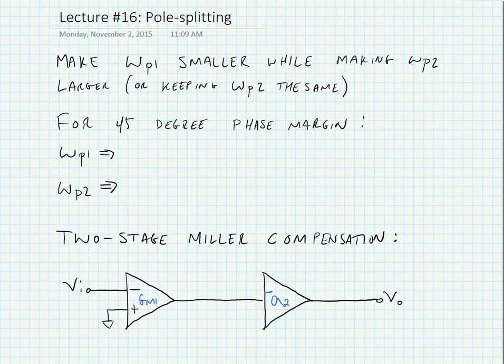Now what we're going to note is that for 45 degree phase margin in the open loop we'd like to set our omega p1 to be the omega 3 dB of the amplifier, and we'd like to set omega p2 so that it intersects the closed loop response.